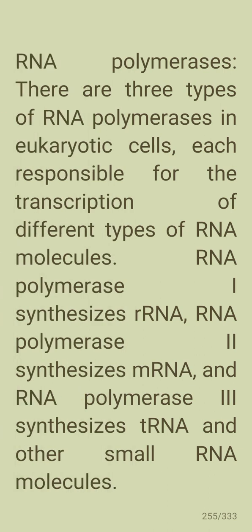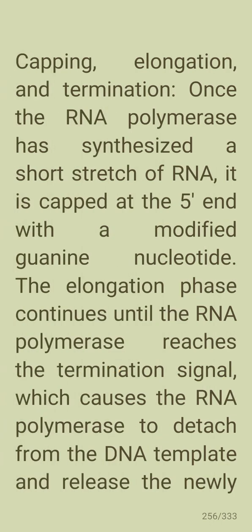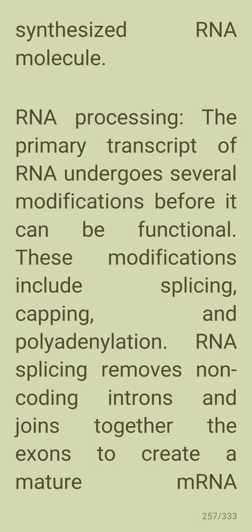There are three types of RNA polymerases in eukaryotic cells: RNA polymerase 1 synthesizes rRNA, RNA polymerase 2 synthesizes mRNA, and RNA polymerase 3 synthesizes tRNA and other small RNA molecules. Once the RNA polymerase synthesizes a short stretch of RNA, it is capped at the 5' end with a modified guanine nucleotide. The elongation phase continues until the RNA polymerase reaches a termination signal, causing it to detach from the DNA template and release the newly synthesized RNA molecule.